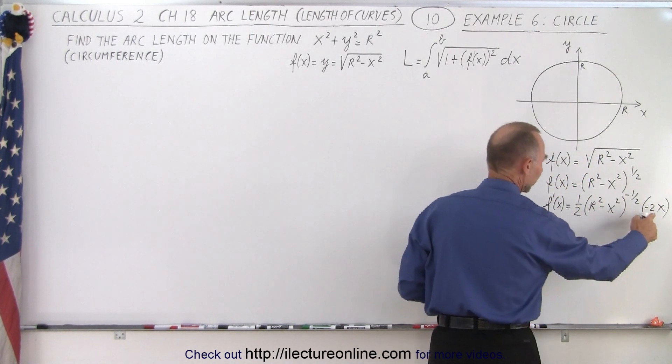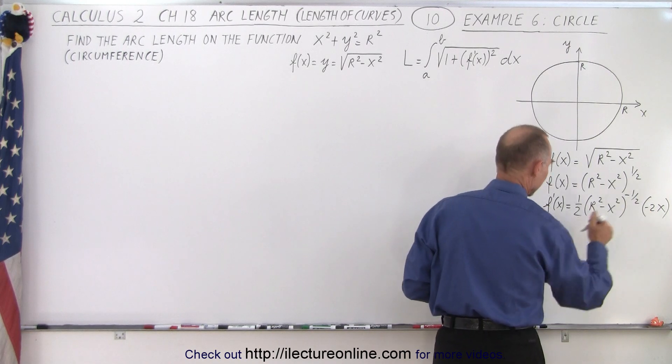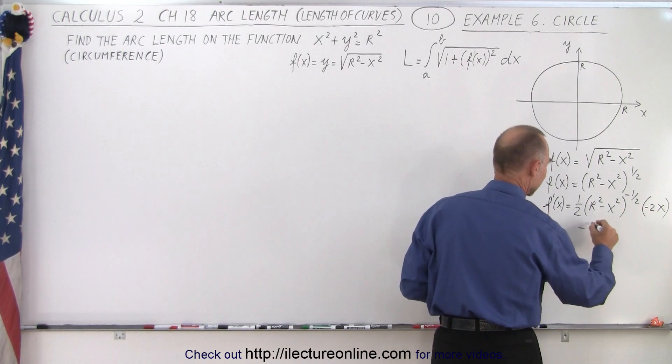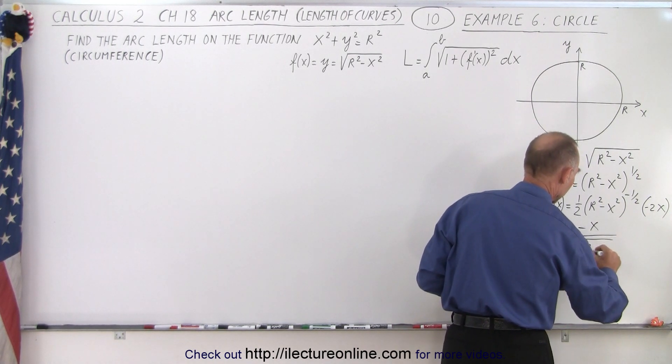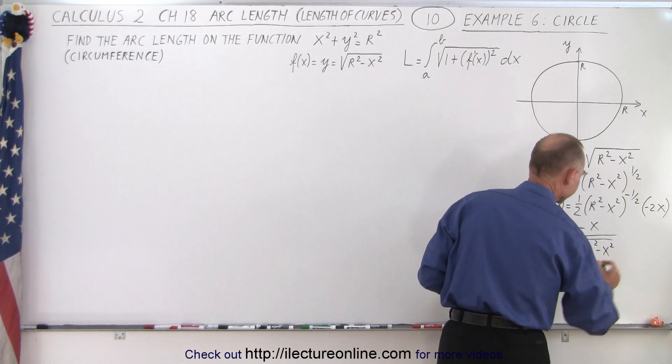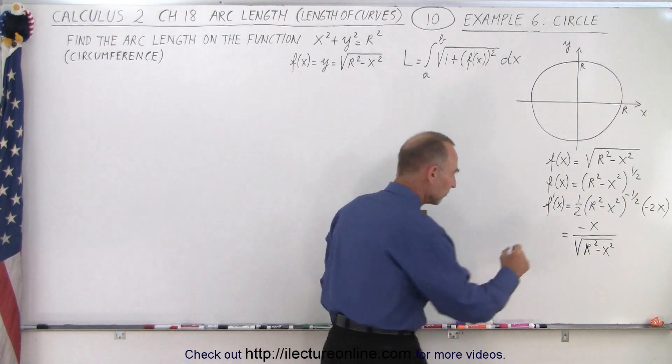Notice the one half cancels out the 2. We still have a negative there. So this becomes equal to a negative x divided by the square root of r² - x². So that's the derivative of that function.